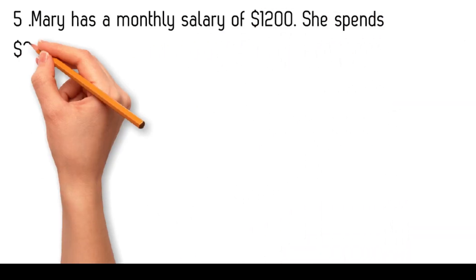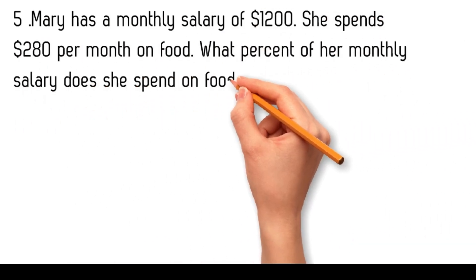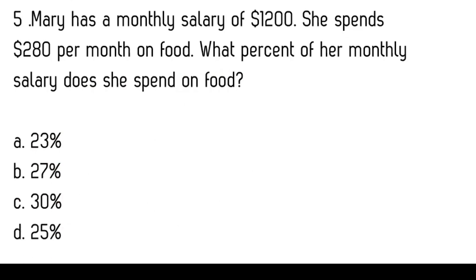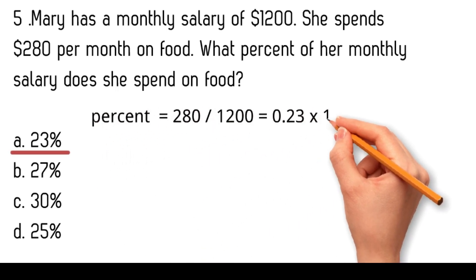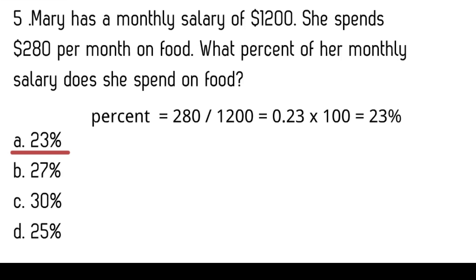Mary has a monthly salary of $1,200. She spends $280 per month on food. What percent of her monthly salary does she spend on food? 23%, 27%, 30%, 25%. The part of her salary spent on food is $280 out of $1,200. Percent equals 280 divided by 1200 equals 0.23, rounded to two decimal places. 0.23 times 100 equals 23%.